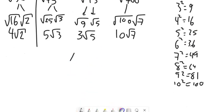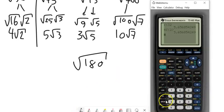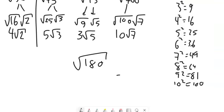You can also do this in pieces. Let's say I had the square root of 180. You might see right away that 36 goes into it — 180 divided by 36 is 5, so this is 36 times 5. Square root of 36 is 6, so it's 6 root 5.